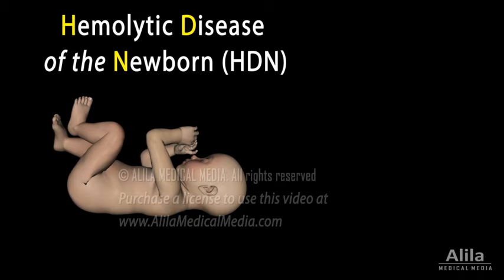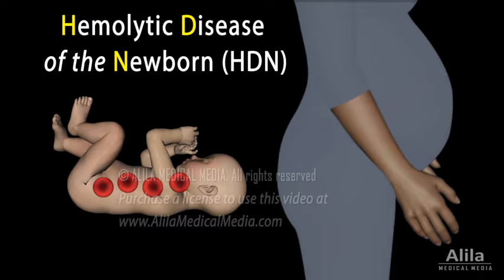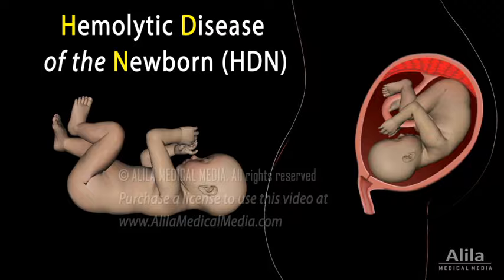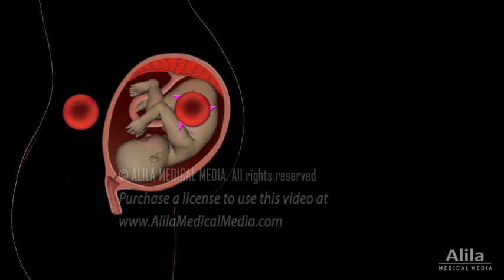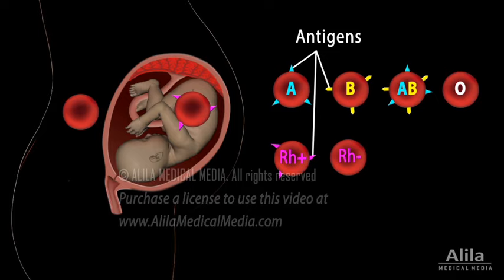Hemolytic disease of the newborn, HDN, is a condition in which red blood cells of a newborn infant or a perinatal fetus are destroyed prematurely, resulting in anemia. HDN occurs when the blood types of the mother and baby are incompatible. A blood type refers to the presence or absence of a certain antigen on the surface of a person's red blood cells.